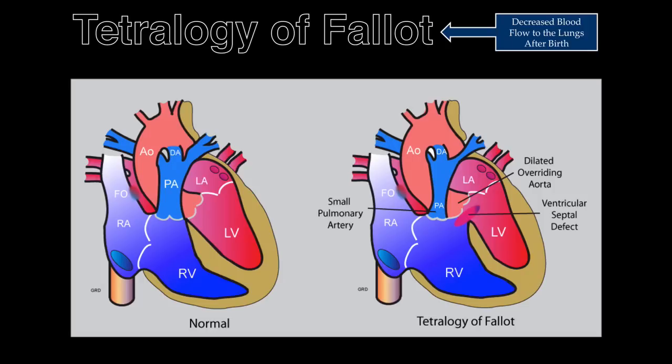However, in the fetus, the right ventricular hypertrophy may not be evident. For this reason, the four-chamber view of the fetal heart may appear to be normal. Prenatally, a dilated aorta that straddles a ventricular septal defect is the most common finding.